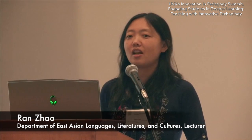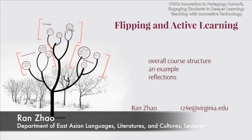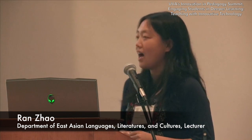I'm going to talk about flipping and active learning in my elementary Chinese class. I'll quickly go over the overall course structure so you have some idea how the course is structured. Then I'll spend more time giving you an example of one class period — what students need to do before class, during class, and after class. And lastly I'll share some of my reflections.